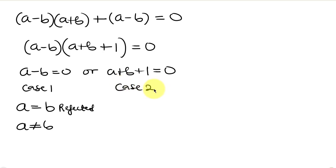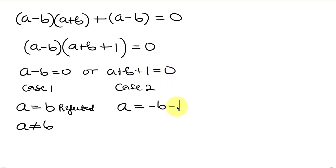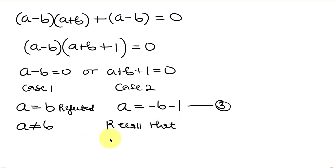Now let's focus on Case 2: a plus b plus 1 equals 0. Moving b and 1 to the right-hand side gives a equals minus b minus 1. We can call this equation 3. Recall from our given question that a squared minus b equals 133 is equation 1, and b squared minus a equals 133 is equation 2.